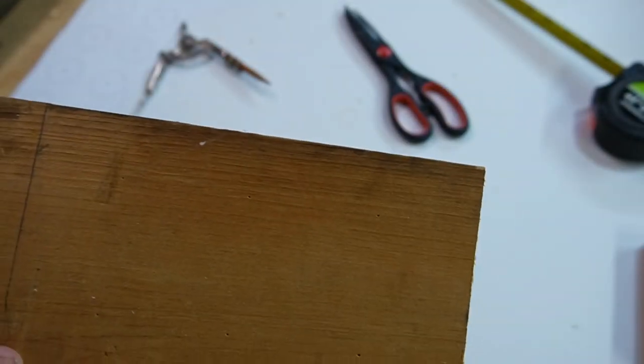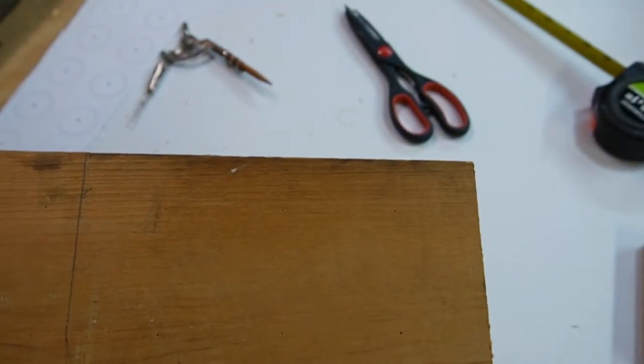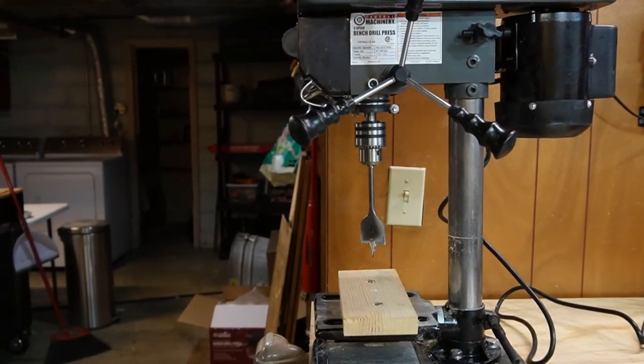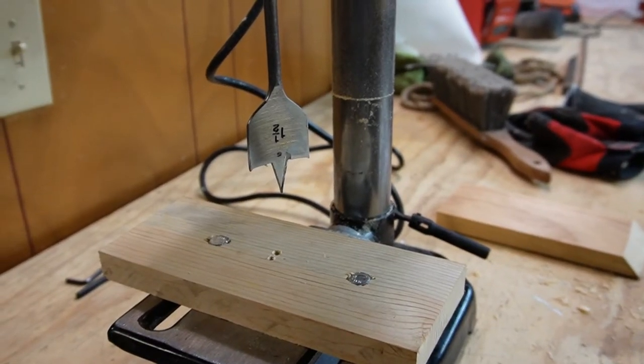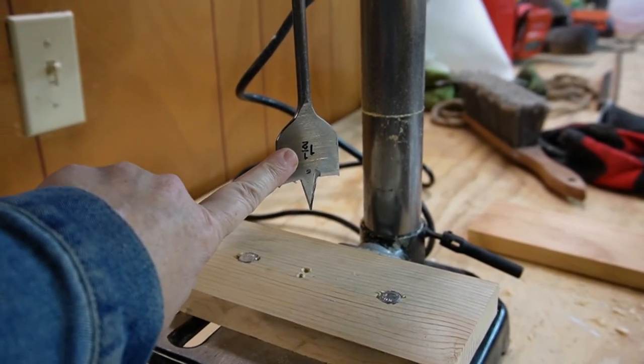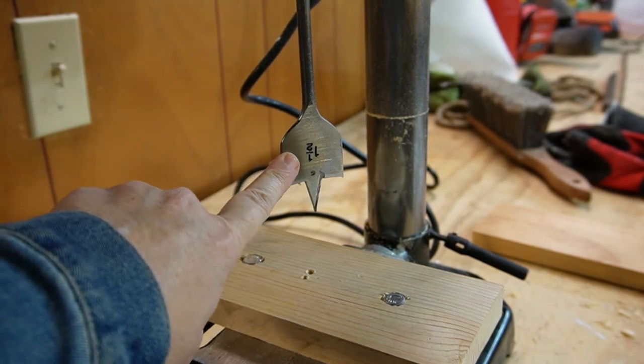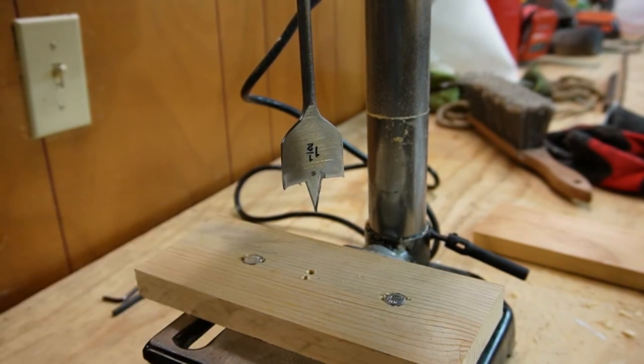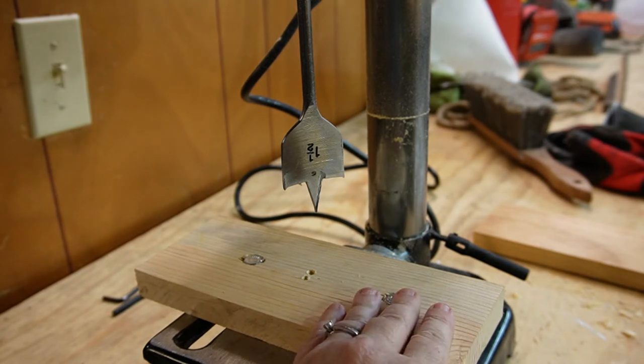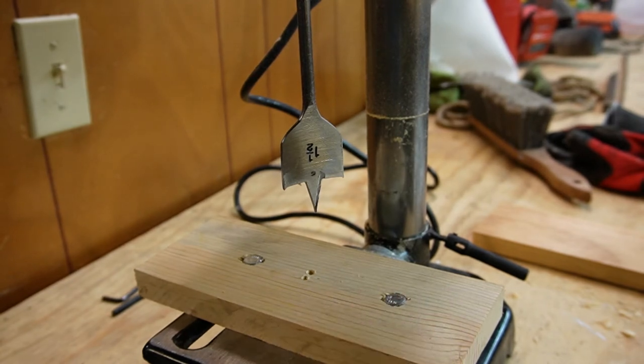But now I can take it to my drill press. On my drill press, I have a spade drill bit and it's one and a half inches. And that's how we will drill all of the holes into our board. I did put a board on the bottom just for stability. Let's see how that works.